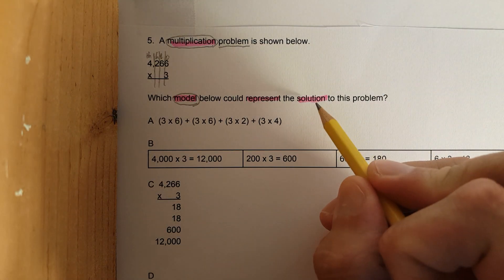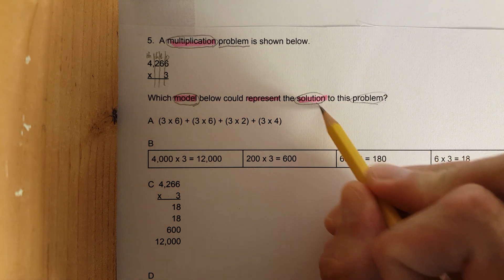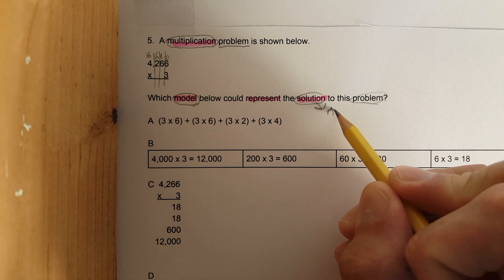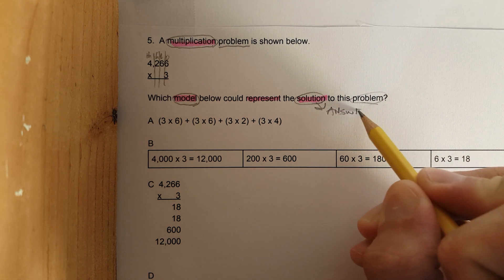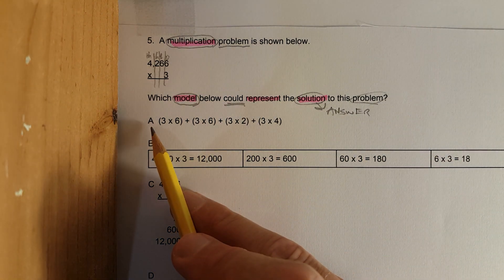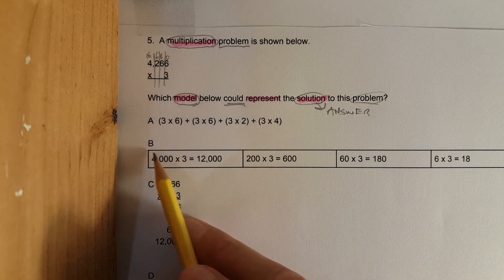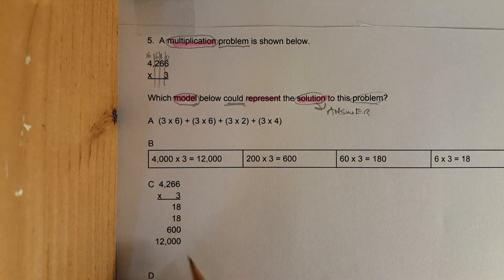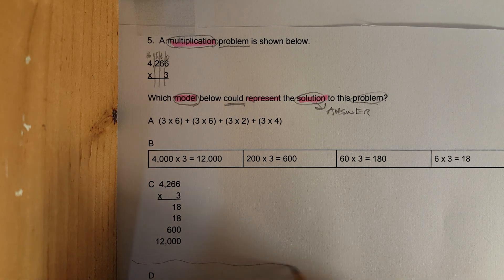this problem? Another word for solution is answer. So there's option A, B, C, and then D which we'll get to at the very end. I'm telling you right now, D is not even close.